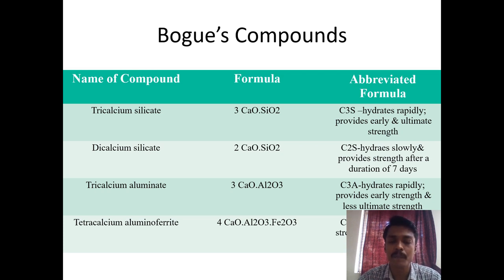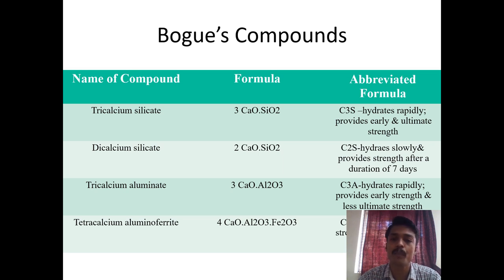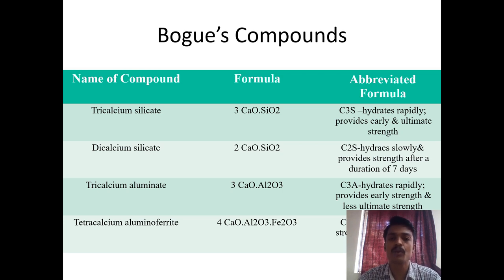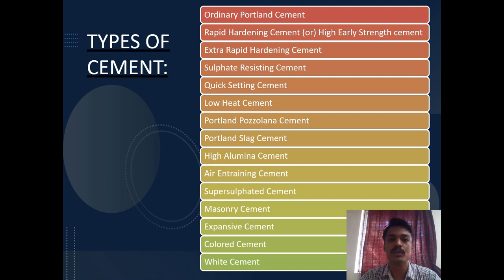Any Portland cement we obtain — whether it's 43 grade, 53 grade, or 33 grade — these compounds are the commonly formed compounds.